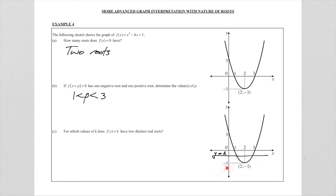If we draw the line below the turning point, there are no points of intersection with the parabola, so there are no real roots. If we draw the line anywhere above the turning point, we get two distinct roots — two different roots. The turning point is at y = -1, so the horizontal line y = k must be above y = -1. Therefore k must be greater than -1.